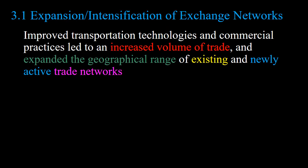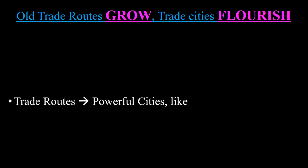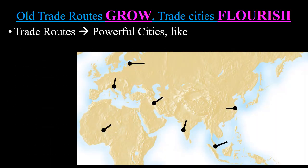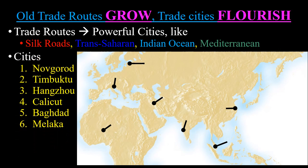There is an increased volume of trade during this time period, over longer distances, with new and existing trade routes. Unit 2 to Unit 3 is a lot of more of the same but bigger — more stuff traded, more people trading, larger distances covered. Old trade routes are going to grow.